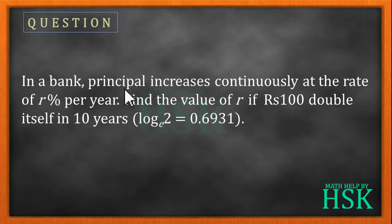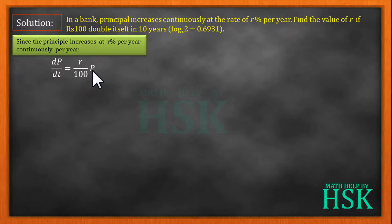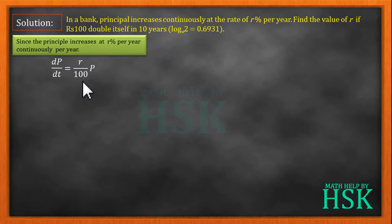We have to calculate the value of r. It is given that the principal increases continuously at a rate of r percent per year. To solve this question, since the principal increases at r percent per year, we can write dp/dt — the rate of change of principal with respect to time — equal to p times r upon 100, because the principal increases r percent per year of the principal.